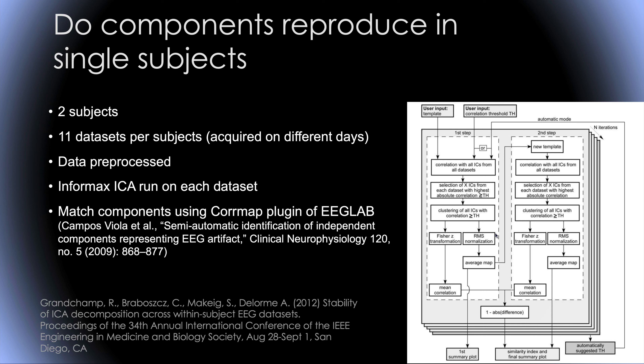We pre-processed the data, filtered it, and then ran InfoMax ICA on each of the datasets. Then we used a special technique to find the components which were common across datasets. For this we used the CORRMAP plugin of EEGLAB, which was developed by Stephen Debener's group.